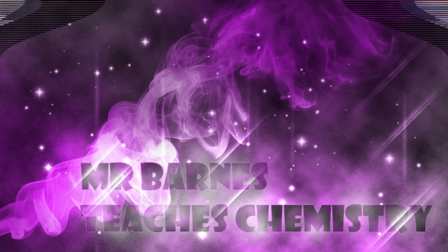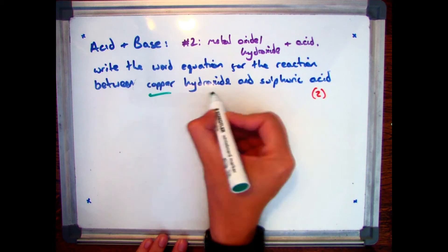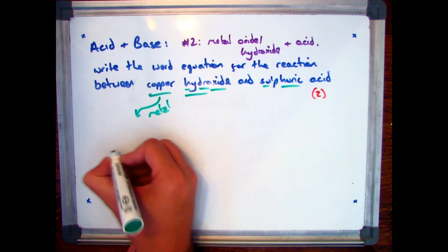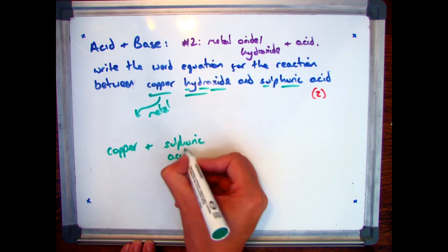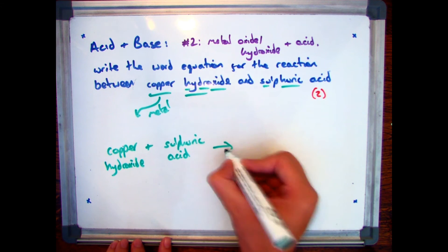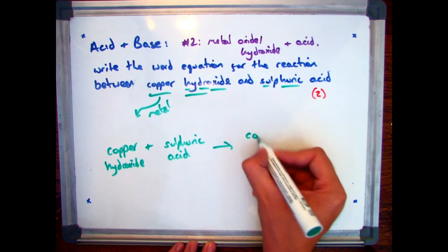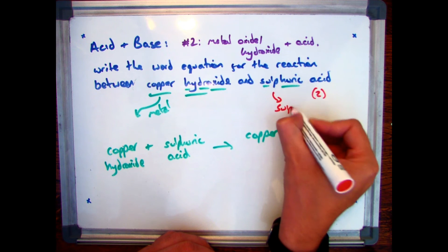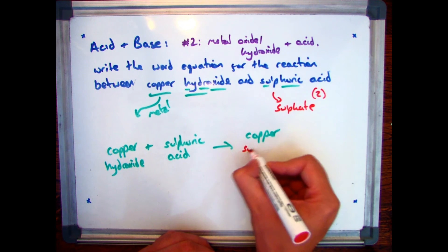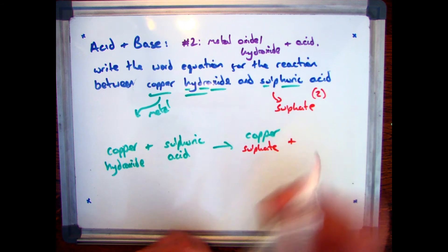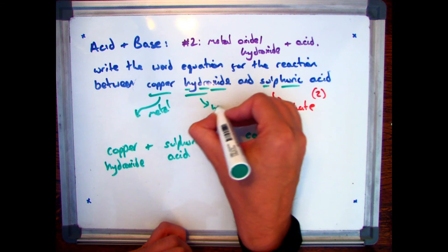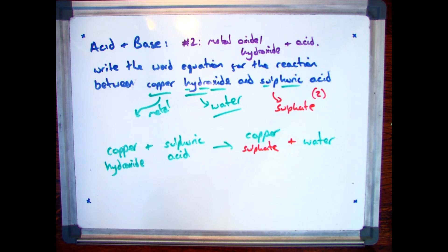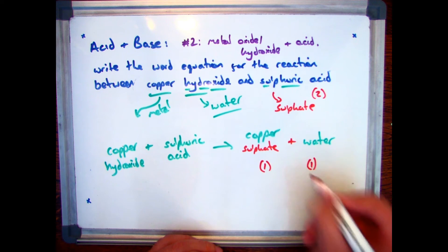We've looked at metals on their own. Let's move on to metal oxides reacting with acids. Here, copper hydroxide is reacting with sulfuric acid. Start off with your reactants: copper hydroxide plus sulfuric acid. When you have a metal on its own, you get hydrogen as a by-product, but when you have a hydroxide, you always get water. So the by-product here is water. Since we have sulfuric acid, the salt is copper sulfate. So the products are copper sulfate for one mark and water for the other.